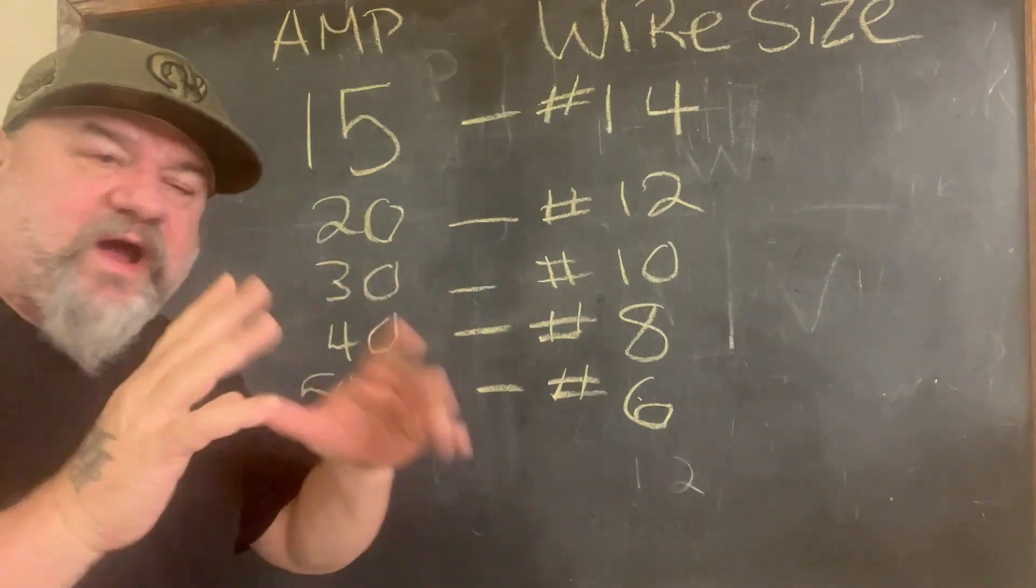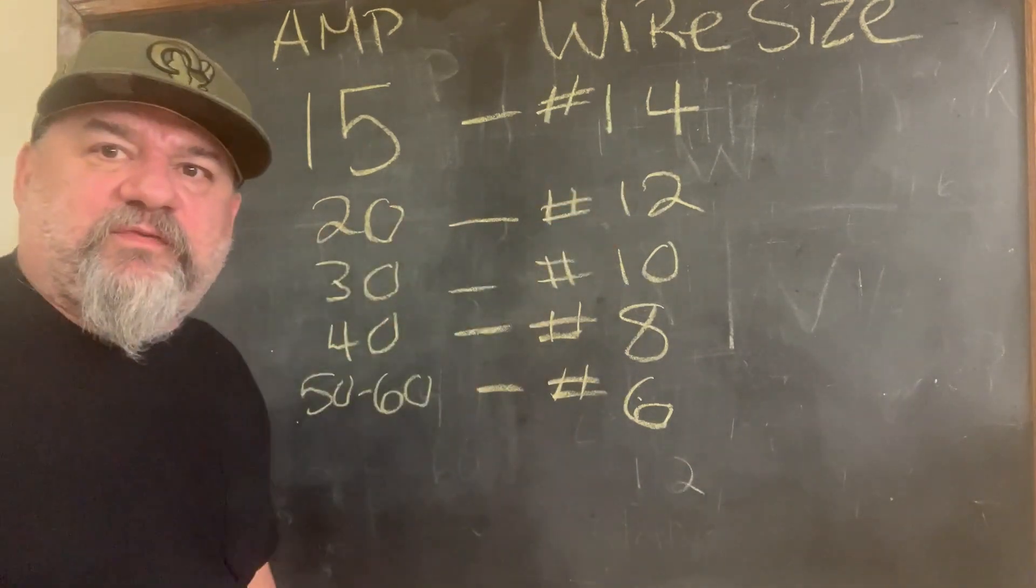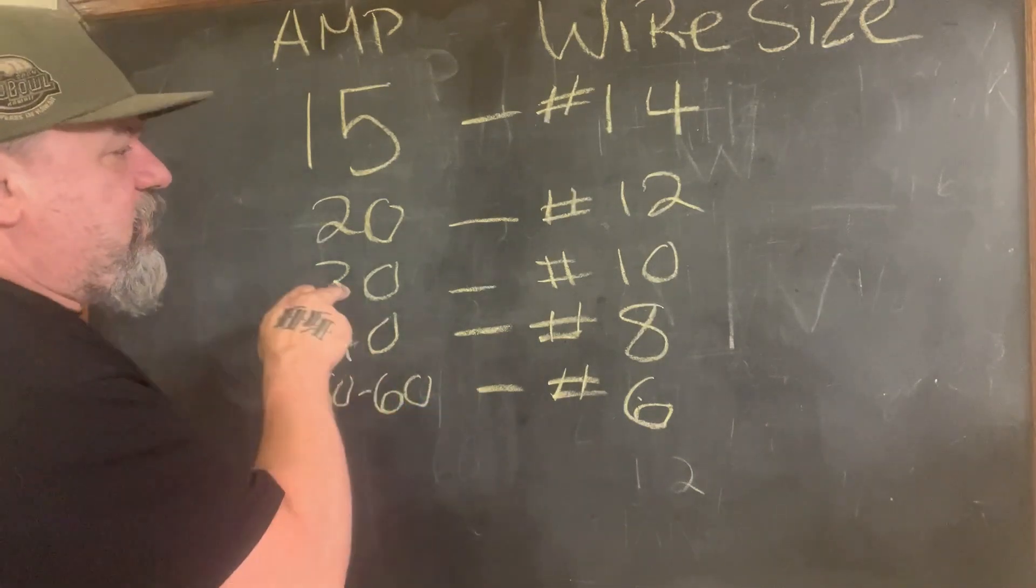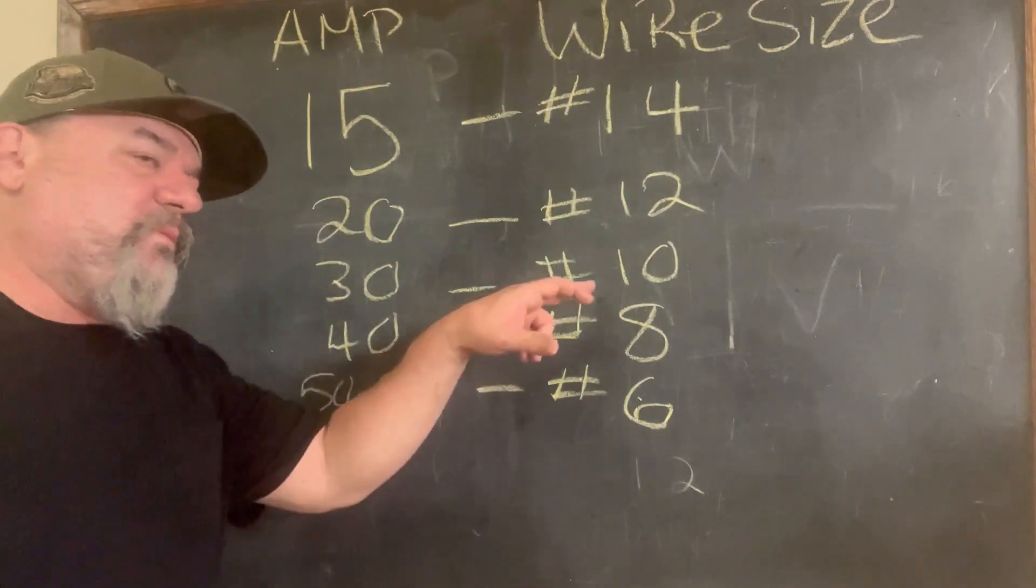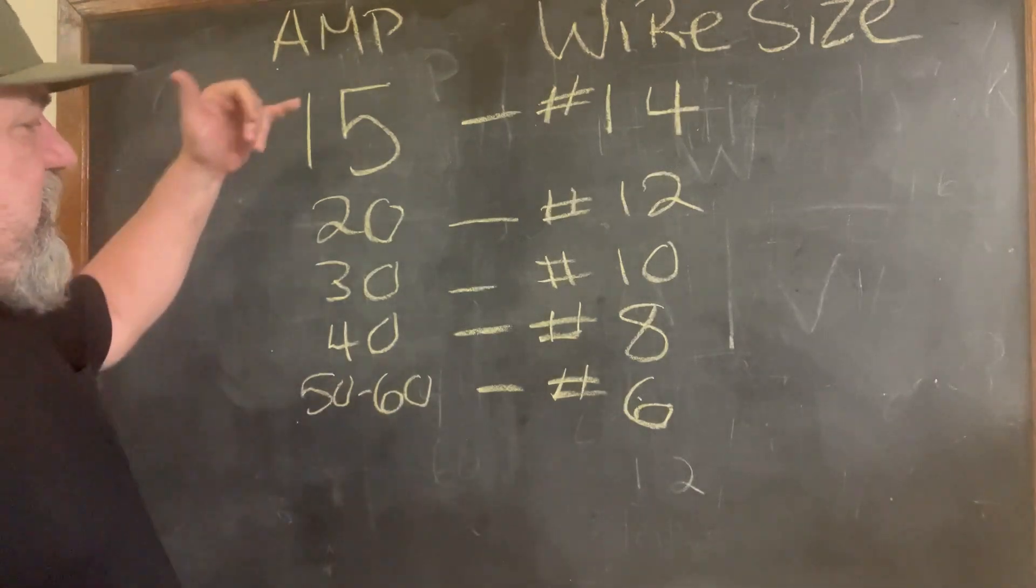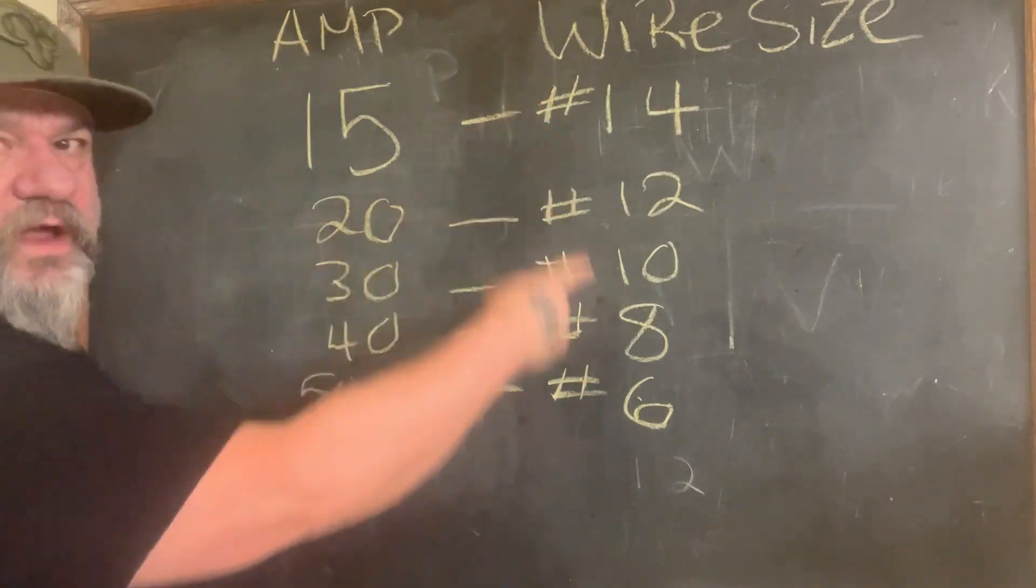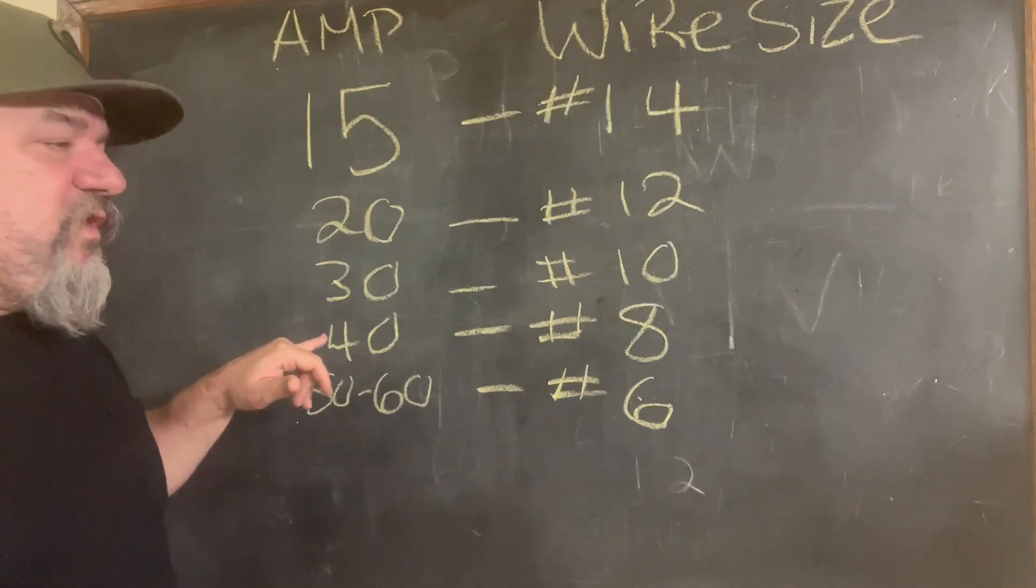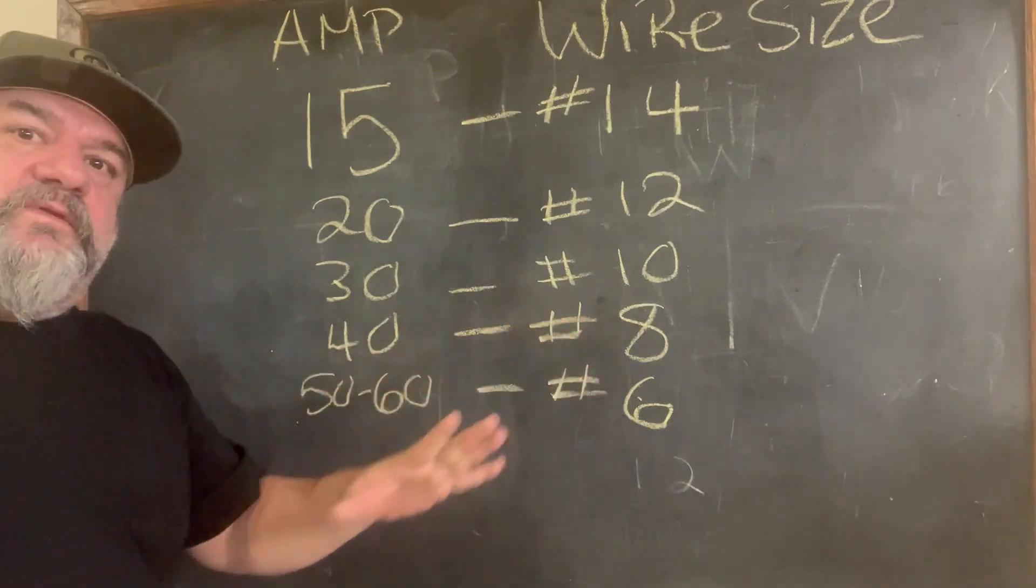20 amp, we arrive there. It's number 12. 30 amp is a number 10. Simple enough. These numbers get higher. These get lower. 40 amp, number eight. Simple enough.